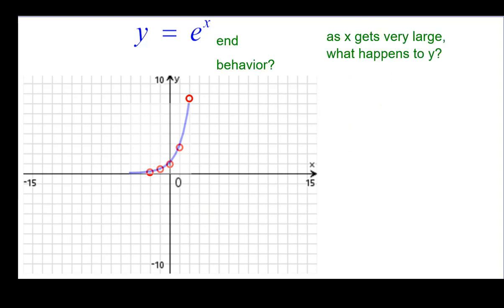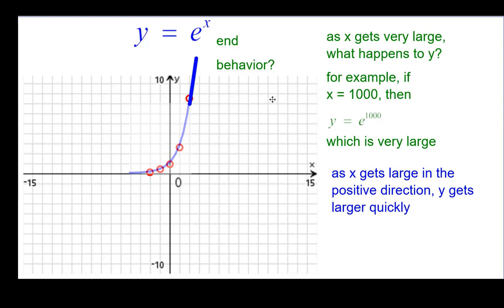And now we need to look at the end behavior. For example, what's happening at this end? What's happening at this end? So we'll start with, as x gets very large, and that's in this direction, what happens to y? So in analyzing that, if x were to be 1,000, e to the 1,000th power, 2.7 times 2.7, 1,000 times, would be a very, very large positive number. We show that on the graph this way. So as x gets large in the positive direction, y gets larger quickly. So that's how we'll indicate that end behavior.